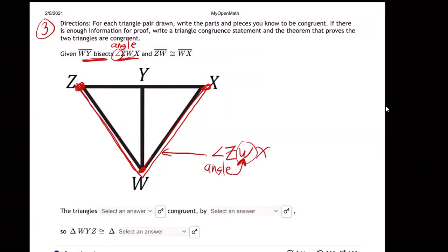Let me go back to where it was there. There we go. Yeah. So angle ZWX. So what are they saying then? They're saying that WY, which means this line right here. Let me back up. So this line right here, bisects. What does that mean? Bisects.